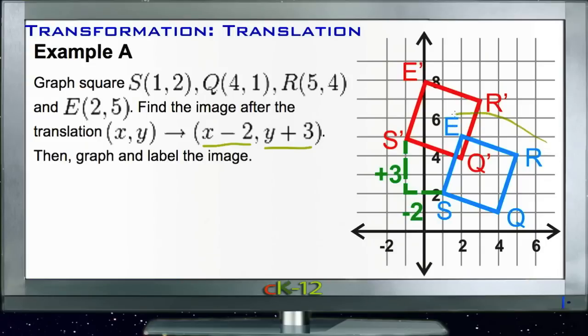If we pick any point, let's say point R right here, its coordinates are (5, 4). So the original figure's point R at (5, 4) is going to be translated by x minus 2 and y plus 3.